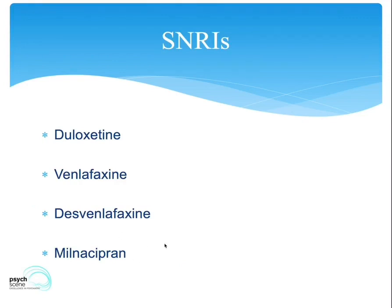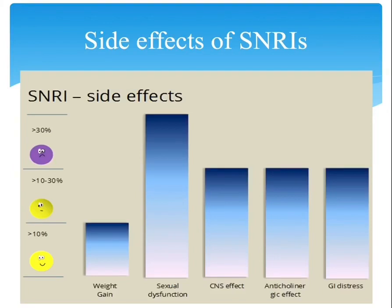Finally, let's look at the side effects. SNRIs act on serotonin, noradrenaline, and dopamine, resulting in an increase of all three. But it's technically not known as a triple agent such as a tricyclic, because it's not directly blocking DAT, but rather indirectly increases dopamine by blocking NAT. So it can be considered as a two-and-a-half antidepressant in a way.